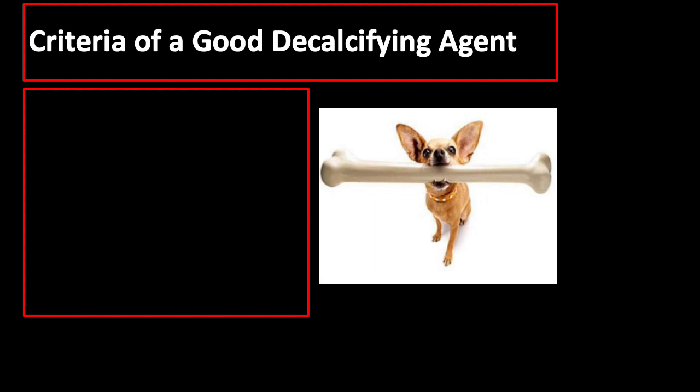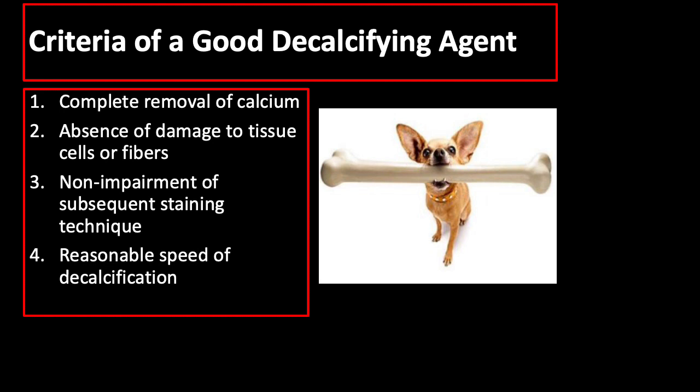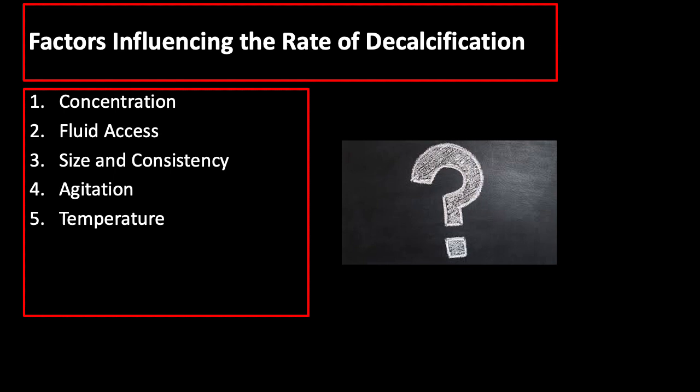There are criteria of a good decalcifying agent, namely: complete removal of calcium, absence of damage to tissue cells or fibers, non-impairment of subsequent staining technique, and reasonable speed of decalcification. There are also factors that influence the rate of decalcification which include concentration, fluid access, size and consistency, agitation, and temperature.